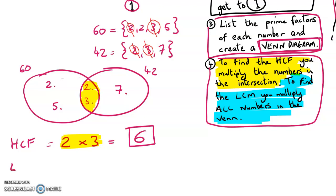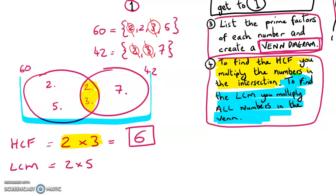Now to get the lowest common multiple, I multiply all the numbers in the Venn diagram — all of these numbers by each other. So the LCM is 2 multiplied by 5, multiplied by 2, multiplied by 3, multiplied by 7. It's a much bigger number, and you will get 420.